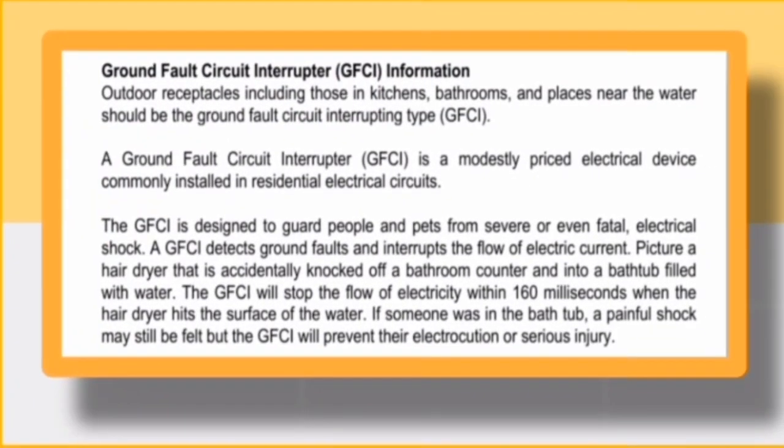Outdoor receptacles or outlets, including those in kitchens, bathrooms, and places near water should be the ground fault circuit interrupting type, or GFCI. Ang GFCI ay may kamahalan compared sa ordinary outlet, at ito ay karaniwang install sa residential electric circuit. Ang disenyo ng GFCI ay para protektahan ang mga tao at mga hayop sa nakamamatay na electrical shock. Kapag ang GFCI ay na-detect na mayroong ground fault sa circuit, kusang itong pahintuin ang daloy ng kuryente.